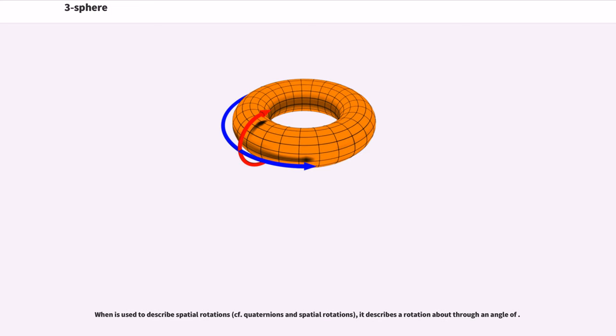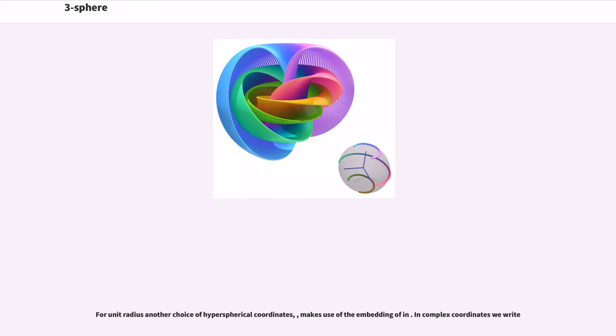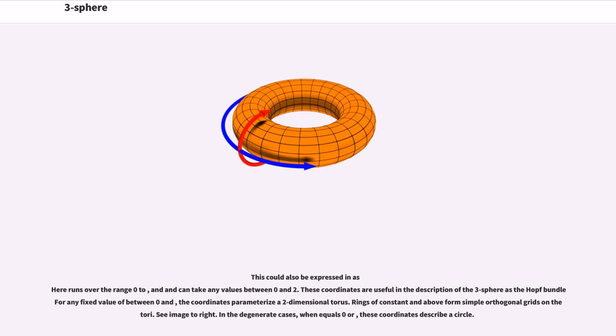it describes a rotation about through an angle of. For unit radius another choice of hyperspherical coordinates makes use of the embedding of in. In complex coordinates we write. This could also be expressed in as here runs over the range zero to pi, and can take any values between zero and two pi. These coordinates are useful in the description of the three sphere's Hopf bundle. For any fixed value of between zero and,